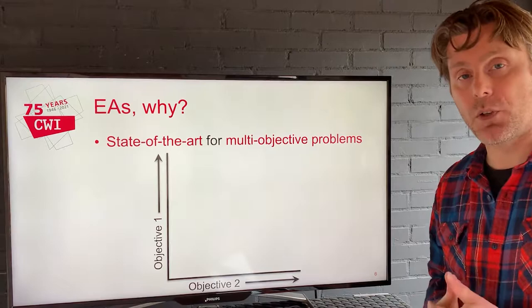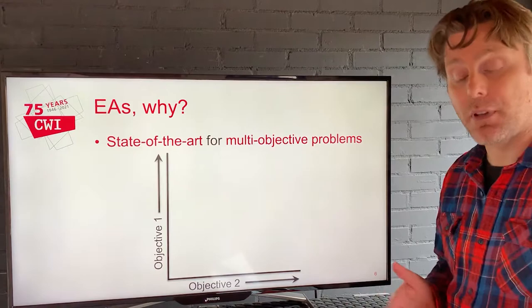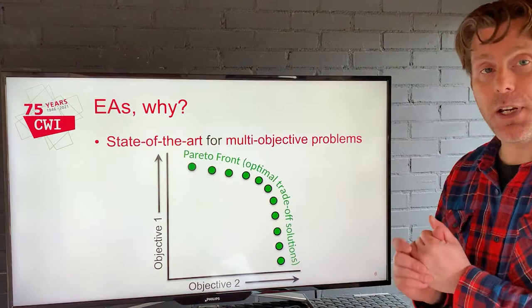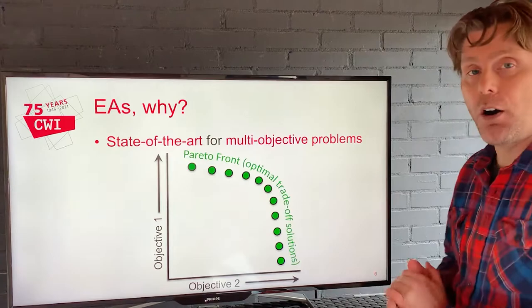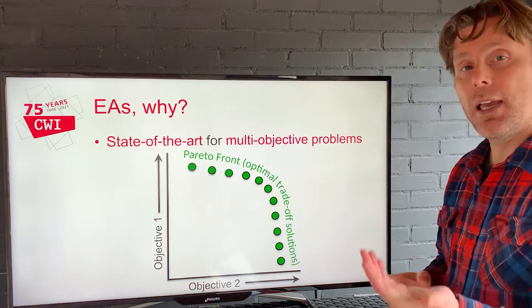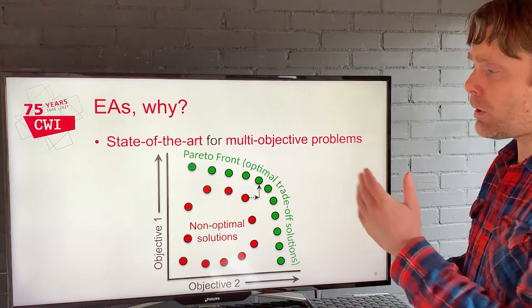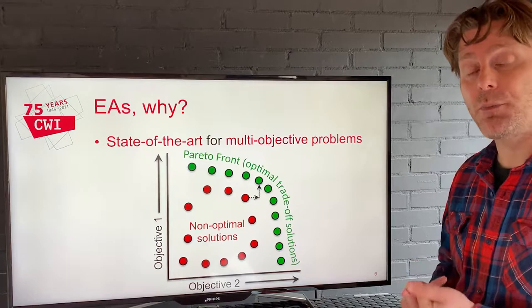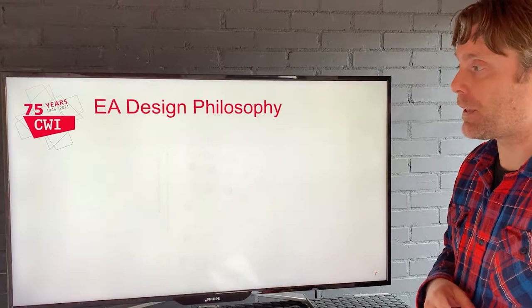Evolutionary algorithms are also very good at multi-objective optimization, which occurs a lot when we solve real-world problems. In the real world, there's not a single thing we want to optimize, but usually multiple things. What we want is not one solution, but a Pareto front of optimal trade-off solutions. One solution may be very good at the first objective but not the second; another does the opposite. We don't want solutions where for every red point there is a green point that is better in both objectives. Evolutionary algorithms are very good at finding the Pareto front because their population can spread across it in a single run, gaining efficiency over other methods.